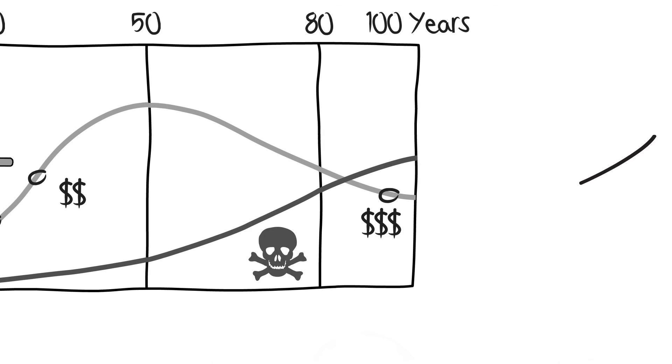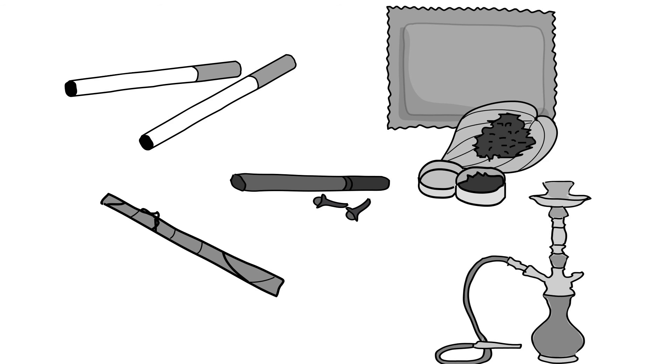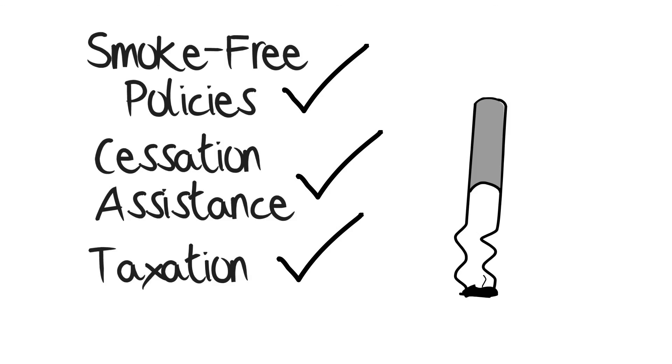While the epidemic is decreasing in developed countries, less developed countries are in the early stages of the tobacco epidemic. There are multiple forms of tobacco use, and patterns of use are changing. Fortunately, there are proven population-level policies and strategies, such as smoke-free air policies, cessation assistance, and taxation, that when implemented fully, can help make the next generation tobacco-free.